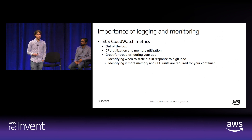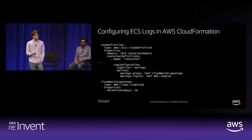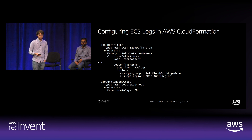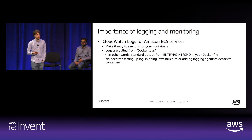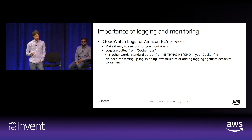Amazon ECS also supports CloudWatch Logs—easy to configure by defining the awslogs log driver in your task definition. Logs come from the output of the docker logs command: the standard output of the entrypoint or CMD in your Dockerfile. Because of this, there's no need to set up log shipping infrastructure or add log agents or sidecars to your containers—ECS does all the work.